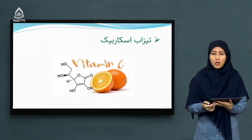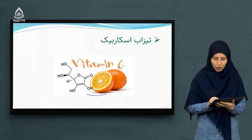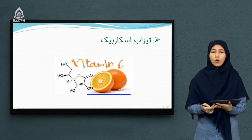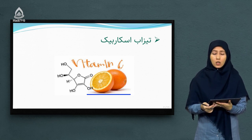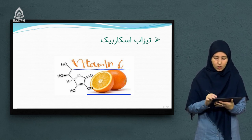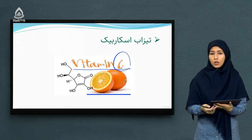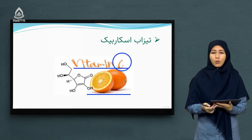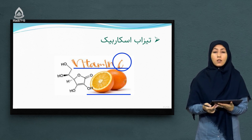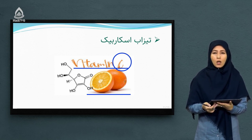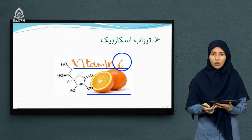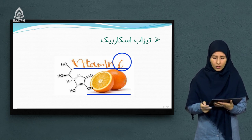تضاب آسکوربیک از جمله تضاب‌های مهم است که در ساختار موجودات از جمله مالته و همچنان لیمو یافت می‌شود. در ساختار ویتامین C هم وجود دارد که بسیار برای بدن مفید است. اشخاصی که دچار سرماخوردگی شده‌اند هم می‌توانند از این ویتامین استفاده کنند که برای بهبودی آنها بسیار مناسب است.